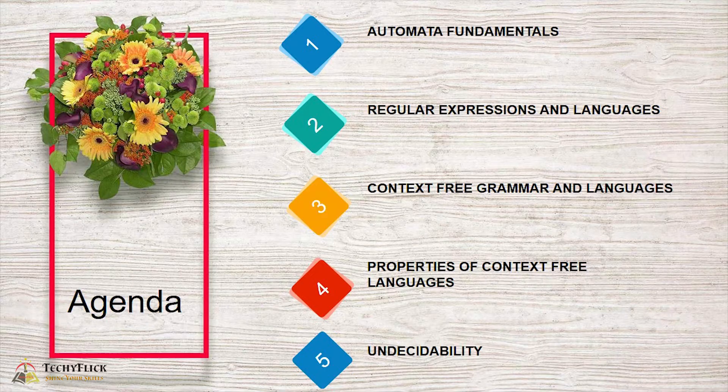The agenda of Theory of Computation covers five units: Unit 1 — Automata Fundamentals; Unit 2 — Regular Expressions and Languages; Unit 3 — Context-Free Grammar and Languages; Unit 4 — Properties of Context-Free Languages; and Unit 5 — Undecidability.